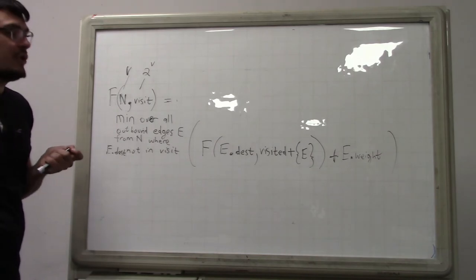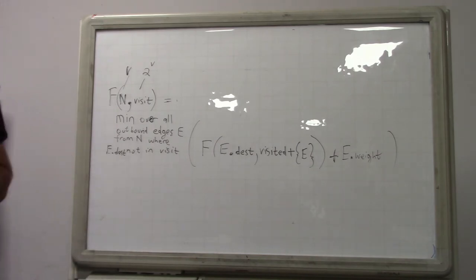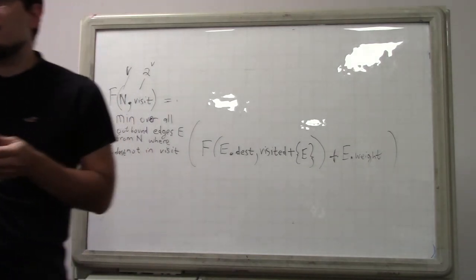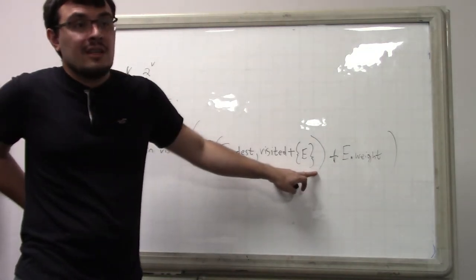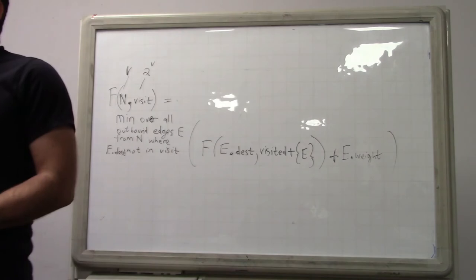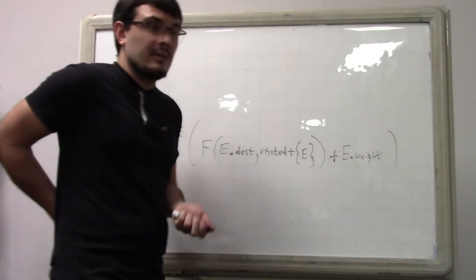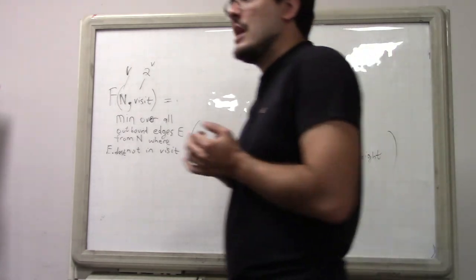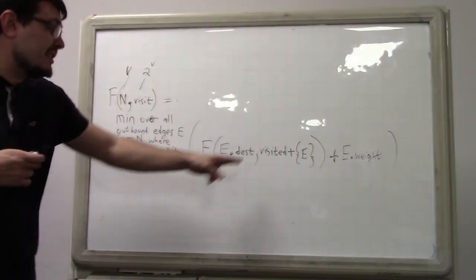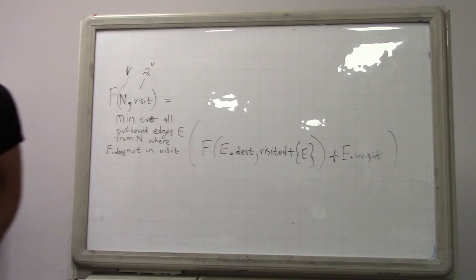Now, how do we know that this recursion is non-circular? That's a good question to ask in more complicated recursions like this. Well, note that we're always adding to the visited set. So actually, not only is this recursion non-circular, but it's never even very deep because every call of this recursion adds yet another element to the set.